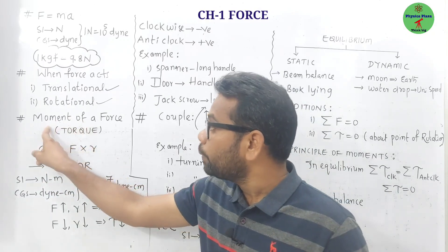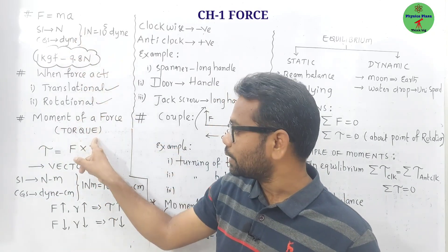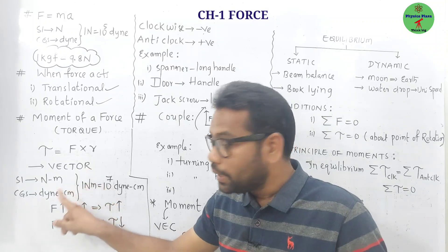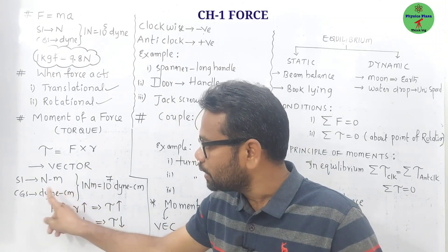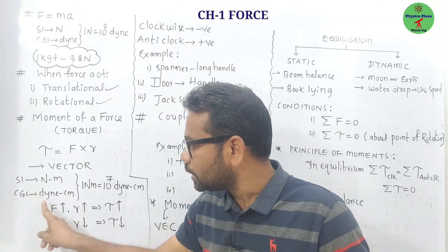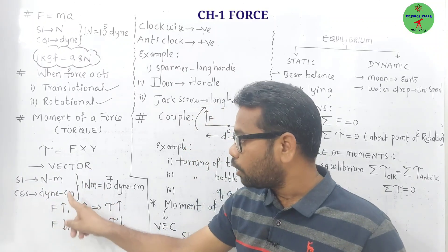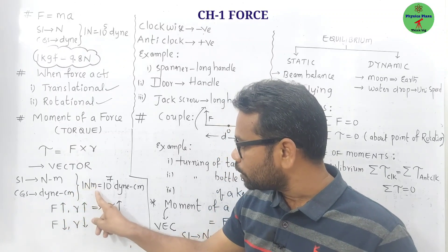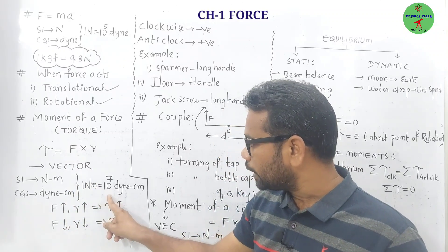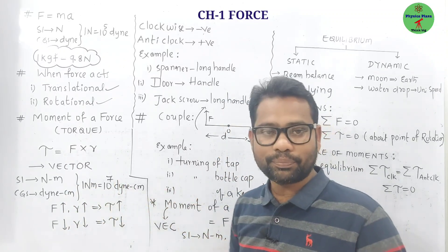Moment of force, like force, torque is a vector quantity. Its SI unit is Newton meter, and CGS unit is dyne centimeter. 1 Newton meter is equal to 10 power 5 dyne centimeter.